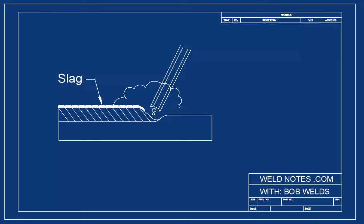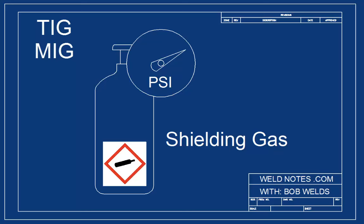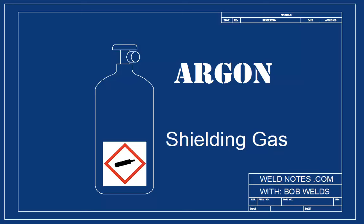In TIG and MIG welding the shielding gas comes from a compressed gas cylinder. These cylinders store the gas at very high pressure often thousands of pounds per square inch. One of the most common types of shielding gas is argon sometimes mixed with carbon dioxide or other gases. And this gas flows through a hose and comes out right at the point of the arc.